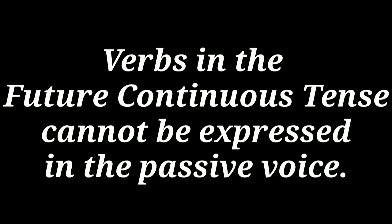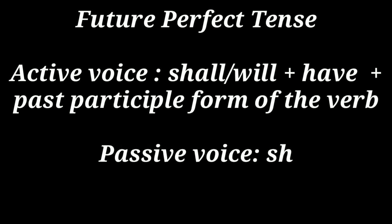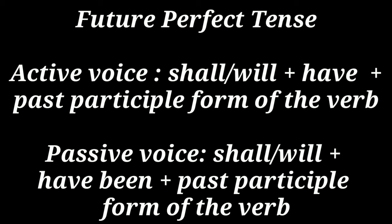In future continuous tense, passive voice cannot be expressed. In future perfect tense, in active voice we write 'shall' or 'will' plus 'have' plus the past participle form of the verb. For example: 'Rita will have learned the poem by evening.' In passive voice we write 'shall' or 'will' plus 'have been' plus the past participle form of the verb. For example: 'The poem will have been learned by Rita by evening.'